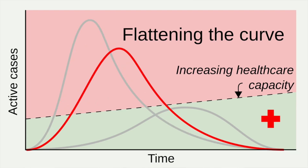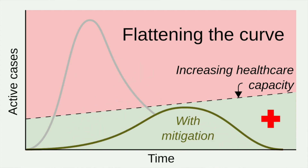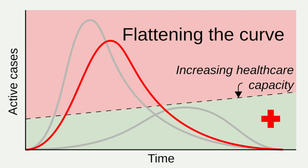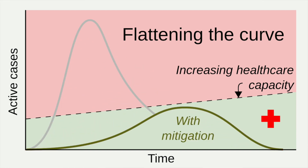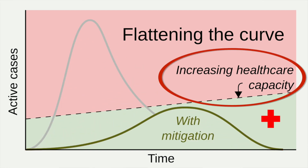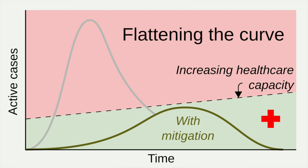One concept I'm sure you've heard about is the idea of flattening the curve. It's actually the epidemic curve that we're trying to flatten. When people talk about flattening the curve they mean slowing the spread of the epidemic so the peak number of cases is reduced. This gives health systems time to adapt and make sure they are not overwhelmed, as well as time to develop new strategies for fighting the disease, such as a vaccine.